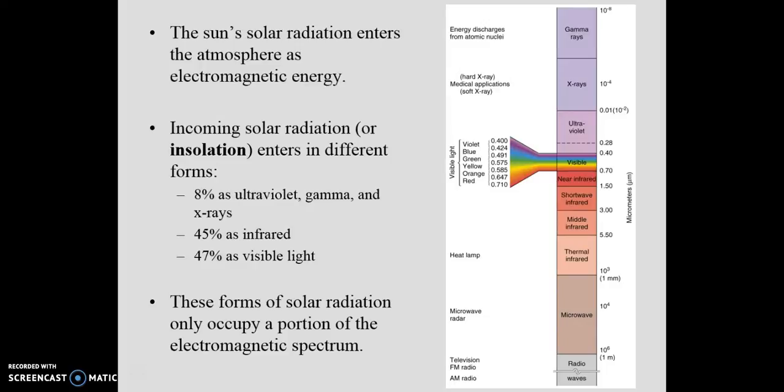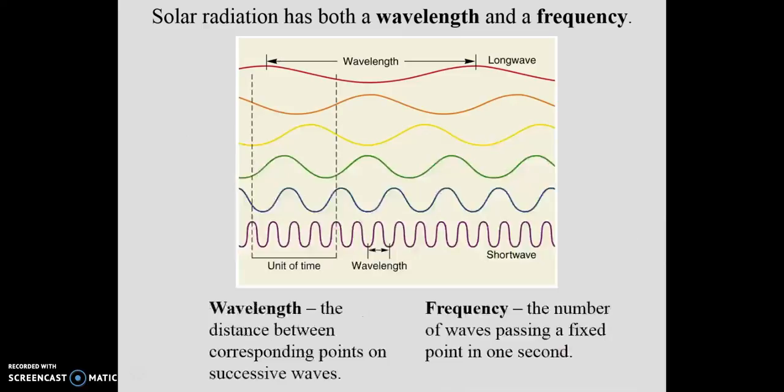As we start going down into the visible light, we start to see our violets, blues, greens, yellow, orange, and red. They are described as being between 0.40 and 0.70 micrometers—that's the wavelength of visible light. We then start going into thermal infrared, microwave, and then our longest waves are going to be towards the bottom of our screen where it's about one meter from crest heights to crest height of the wave. Those are going to be our television, AM radio, and FM radio. Now let's go ahead and look at solar radiation as both a wavelength and frequency, and I'm going to go ahead and stop the lecture here and we'll pick up.